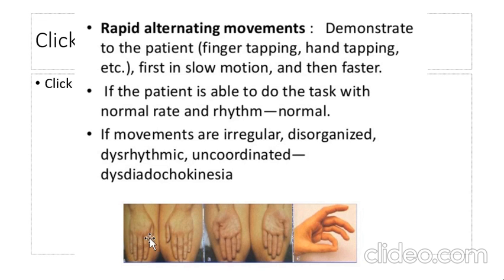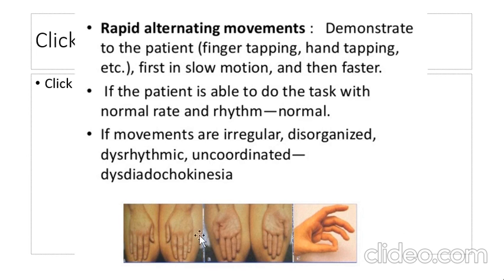Rapid alternating movement involves rapid supination and pronation of the hand alternately, and touching the thumb with alternating fingers. Demonstrate to the patient — this is called hand tapping or rapid alternating movement. If the subject cannot do this rapidly, it indicates a disorder of the cerebellum.